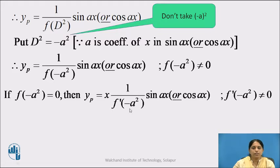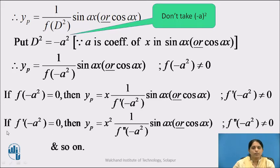In f′(D) we again rearrange for D² and replace D² by −a², giving f′(−a²), which again must be non-zero. If it is again zero, yp is multiplied once more by x, giving x² · 1 upon f″(−a²) into sin x or cos x, provided f″(−a²) ≠ 0. We continue this process until we obtain a non-zero denominator.